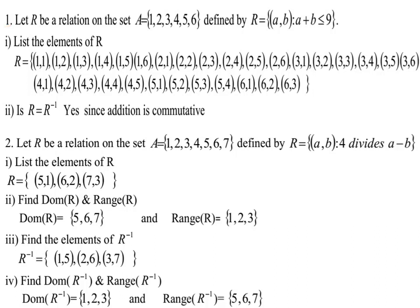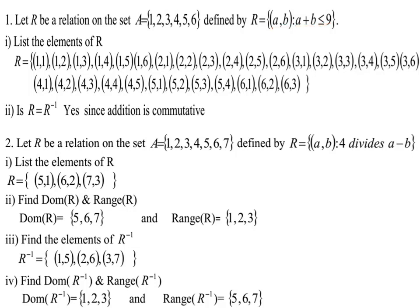Let R be a relation on set A which contains the elements 1, 2, 3, 4, 5, 6, defined by the relation R which contains the ordered pairs (a, b) such that a plus b is less than or equal to nine. We need to list the elements of R. Since R is a relation on set A, R is defined by the ordered pair (a, b) such that a plus b is less than or equal to nine.